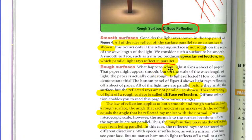Rough surfaces, but what happens when we hit a rough surface? All the light rays are parallel before they strike the surface, but the reflected rays are not parallel. This scattering of light off a rough surface is called diffuse reflection. Diffuse reflection enables you to read this page from various angles.